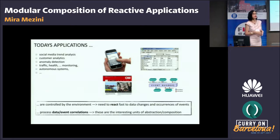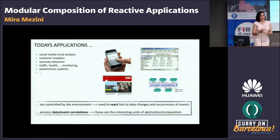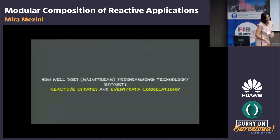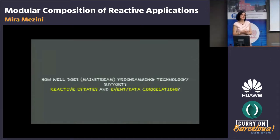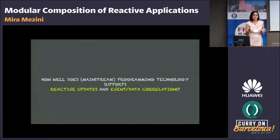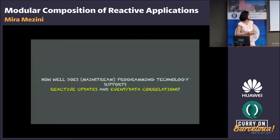Correlations are the units — the more interesting units of abstraction and composition — rather than individual data units. So the question is: how well does existing programming technology, mainstream or not so mainstream, support these two things: reactive computations, reactive updates, and event-data correlations?